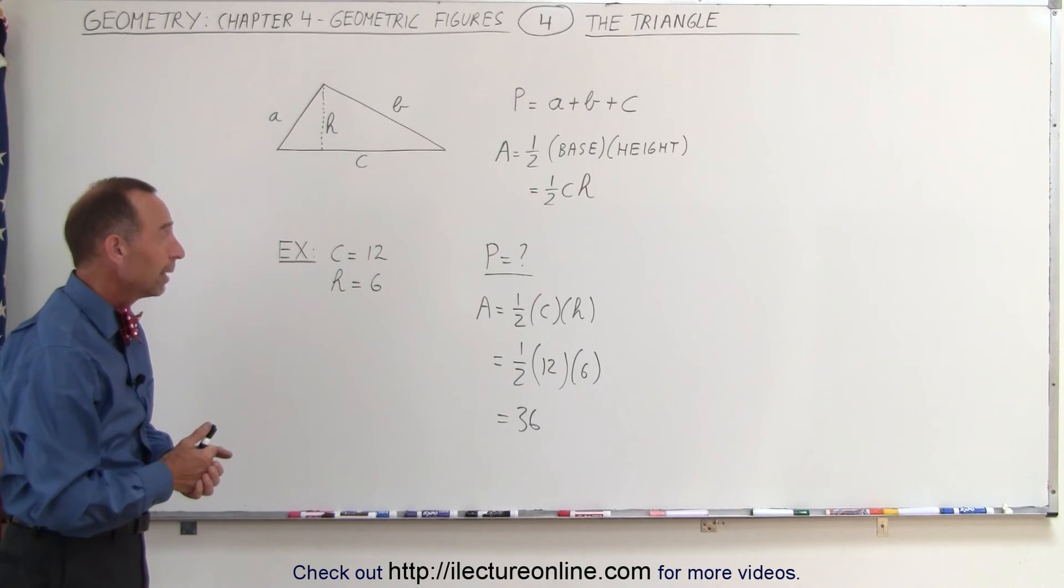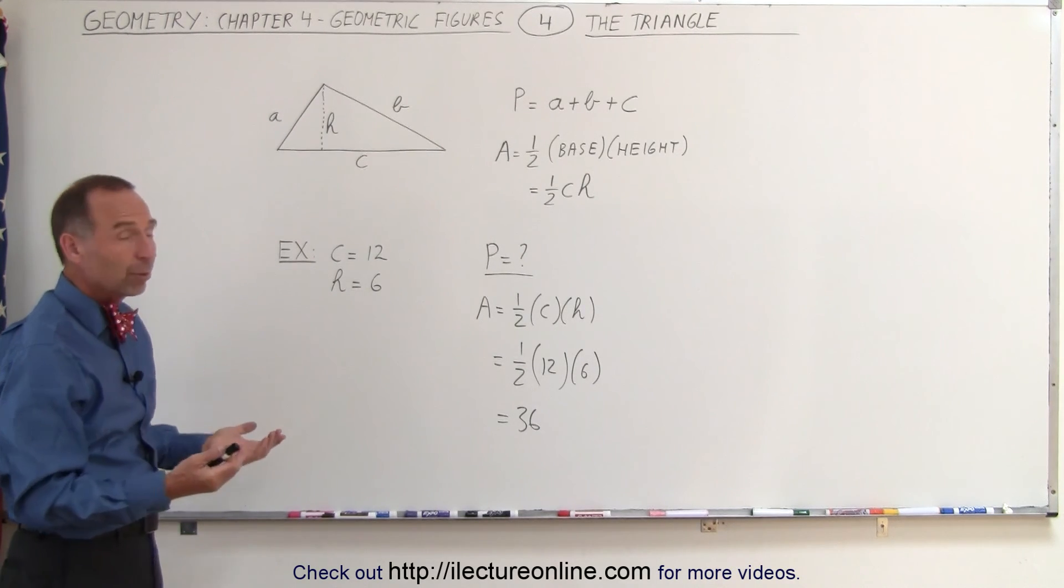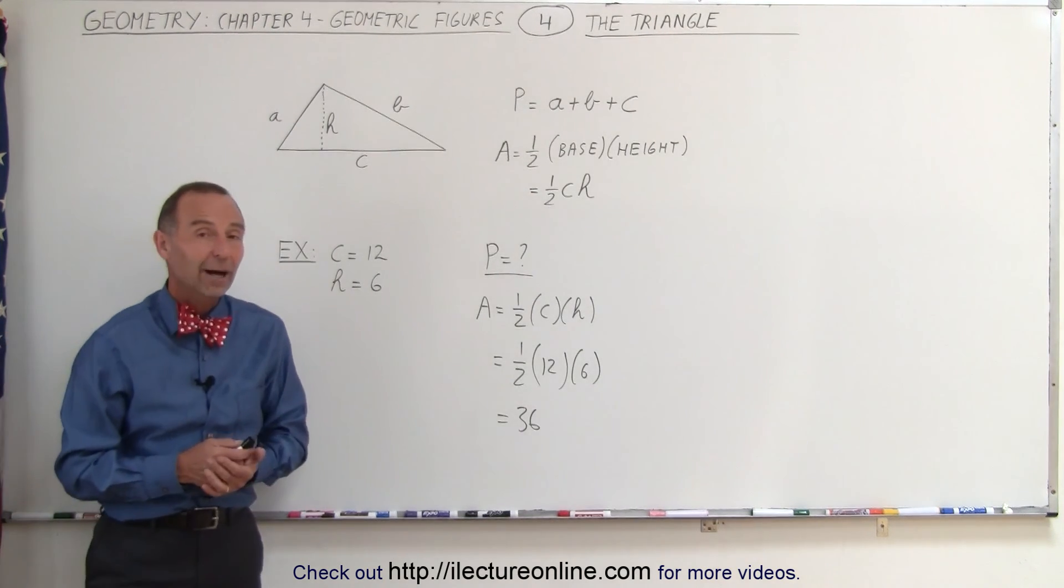Again, depending upon what the units are. But that's how we find the area of the rectangle. And if you want to find the perimeter, you need to be given all three sides in order to do that as well. And that's how it's done.